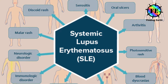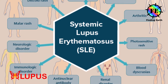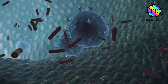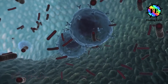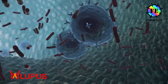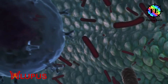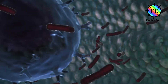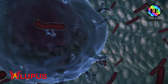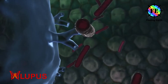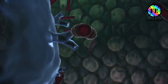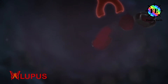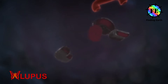The most common and severe form is systemic lupus erythematosus. Under normal function, the immune system makes proteins called antibodies in order to protect and fight against antigens such as viruses and bacteria. Lupus makes the immune system unable to differentiate between antigens and healthy tissues, leading it to direct antibodies against healthy tissues, not just antigens, causing swelling, pain and tissue damage.